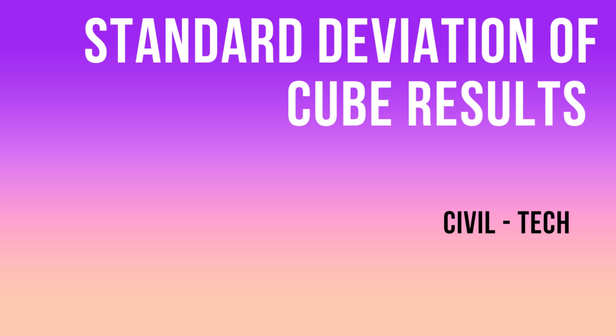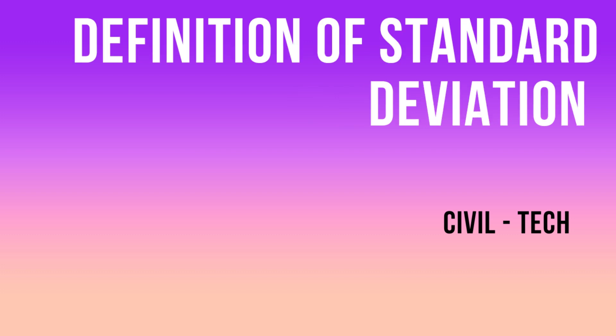Today we are going to see about standard deviation. Standard deviation is a number used to tell how measurements for a group are spread out from the average. A low standard deviation means that most of the numbers are close to the average, while a high standard deviation means that the numbers are more spread out from the average value. This is the basic definition of standard deviation.